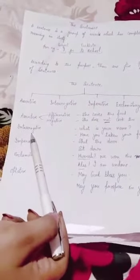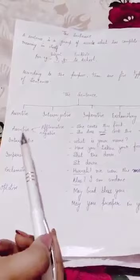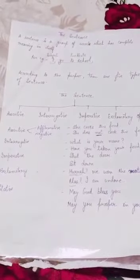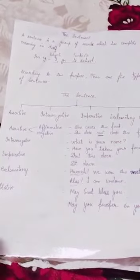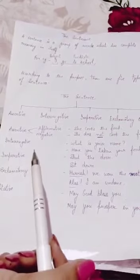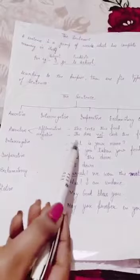The next kind of sentence is interrogative. Interrogative sentences are used to ask questions. They always end with a question mark. A question mark is a must in these sentences.